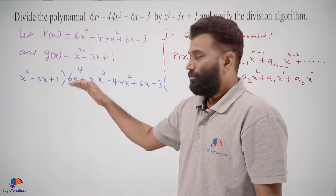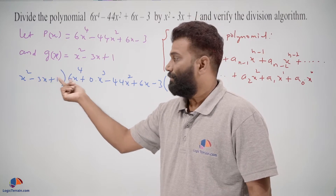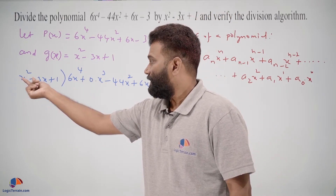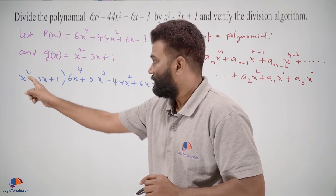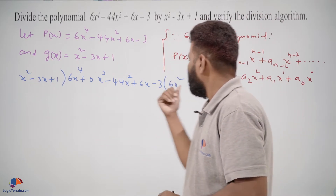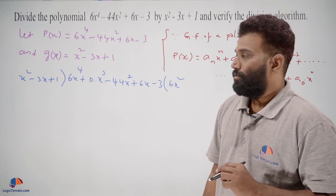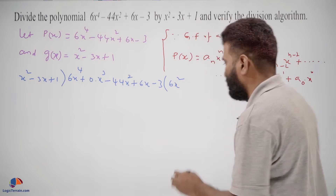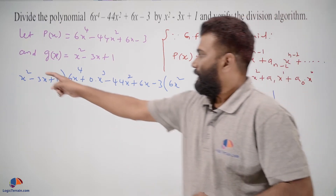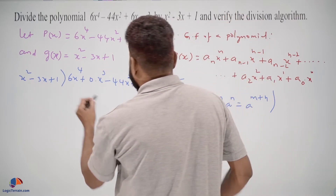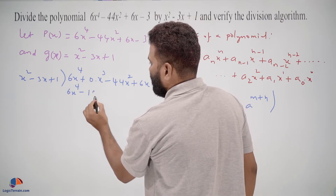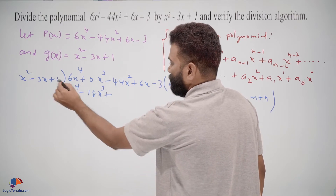For division, we make the first term match. To get 6x to the power of 4, we multiply the divisor by 6x square: 6x square times x square gives x to the power of 4, using the rule a^m · a^m = a^(m+m). So 6x square times the divisor gives 6x⁴ minus 18x cube plus 6x square.